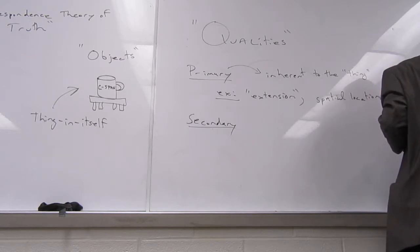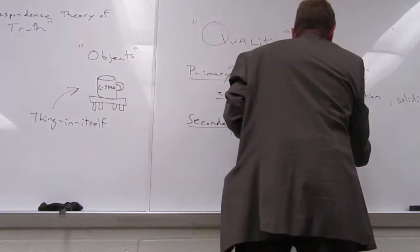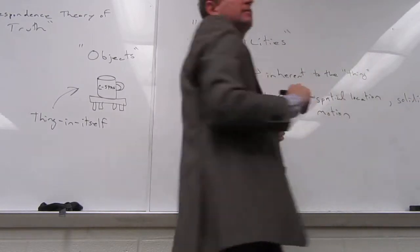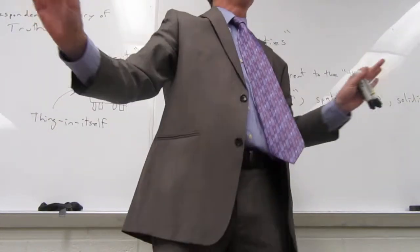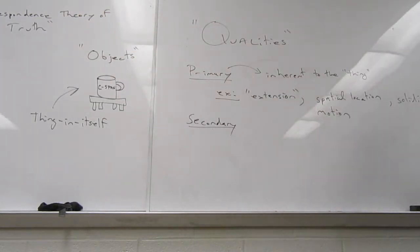Things like its solidity would also count as a primary quality. Things like number, it is a singular desk. Things like motion, it's stable. It's not moving around the room. These are things that would be true, according to Locke. Independent of perceivers.